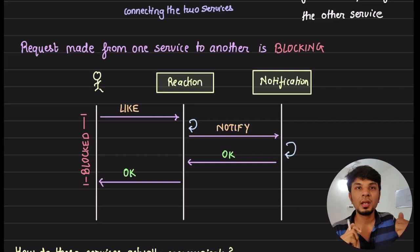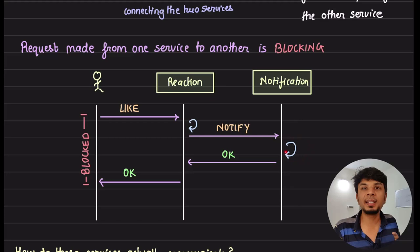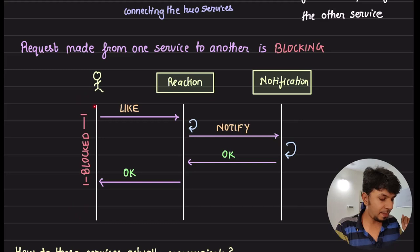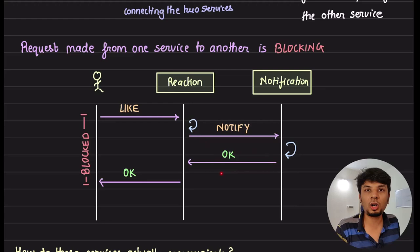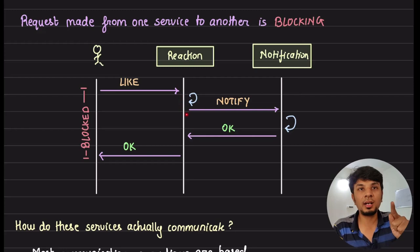The key highlight of synchronous communication is that it is a blocking call. When the user hits the like button, the reaction service API is invoked, it updates its database, then triggers the notification service. The notification service sends the notification, responds OK to the reaction service, and then the reaction service responds OK to the user. So unless the notification is sent, the main API call from the user is never completed.